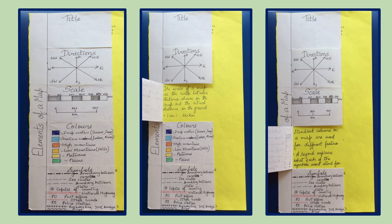Light blue for shallow waters as in lakes or rivers. Brown for high mountains. Orange for low mountains like hills. Yellow for plateaus. And green for plains.